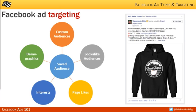In addition to creating audiences from interests and demographics, you can also create lookalike audiences from your website custom audience or email list custom audience. Facebook will then create an audience of the top 1% of Facebook users who are most like your website visitors or email list. This lookalike audience can then be filtered by demographics and interests, and you can save that audience once you get it perfect and use it again and again.